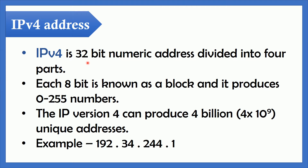The IPv4 address is 32 bits in length and is binary in nature, but it is expressed in a format that can be easily understood by the human brain. The 32 bits are broken into 4 sections of 8 bits each, known as octets or bytes. Each octet is then converted into decimal numbers between 0 to 255, and each octet is separated from the following one by dots, as you can see in the example. IPv4 can produce 4 billion unique addresses.